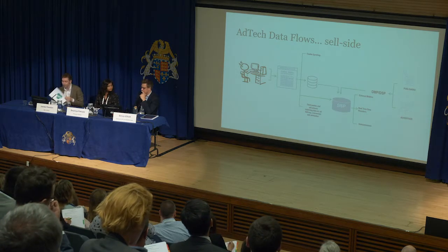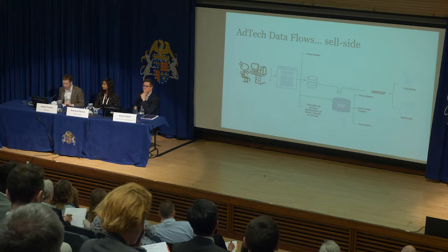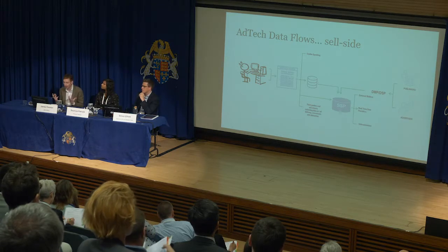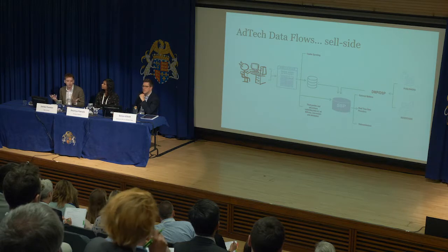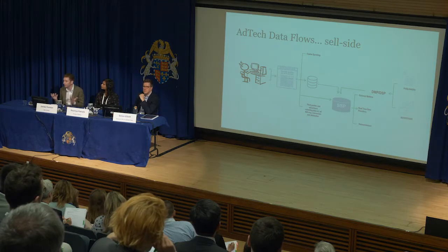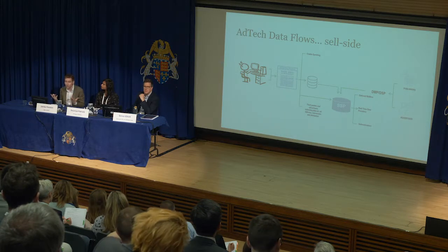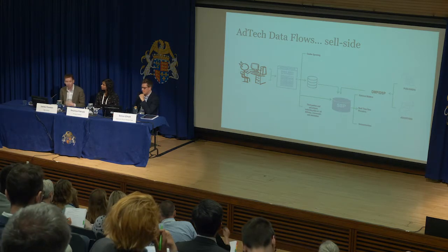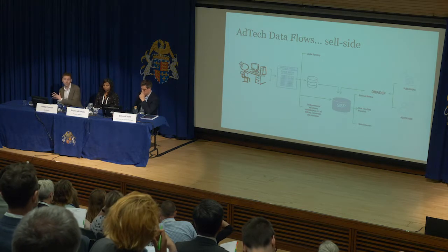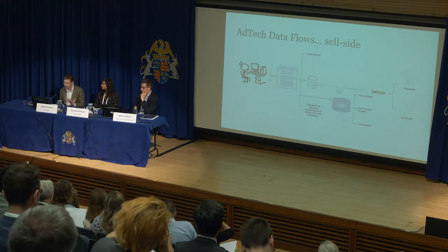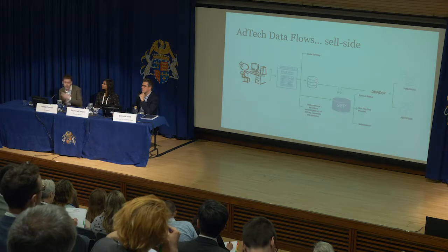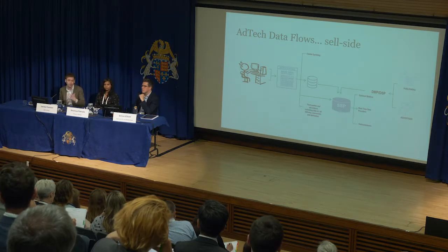One of the difficult parts of ad tech, and what makes it quite difficult from a compliance perspective, is the huge amount of data sharing that happens in a very short amount of time. Generally, when you're browsing online and loading a website, the publisher is holding a real-time auction for advertising inventory on their site. On the other side, advertisers are bidding on that inventory. Those advertisers want to target advertising as effectively as possible, using cookie data to learn insights and segment individuals, so that advertising goes to those most likely to convert and buy their products.